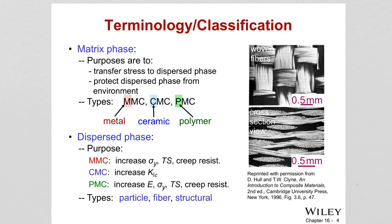Some examples of composites: space shuttle tiles consist of silica fibers and air, which exhibit low thermal conductivity. Epoxies may be filled with silver to increase thermal conductivity, since silver is thermally conductive but epoxy is not. Zirconia coating on a turbine blade provides protection against high temperatures — making a coating on top of another material is also a composite, since you are using the properties of two different materials.